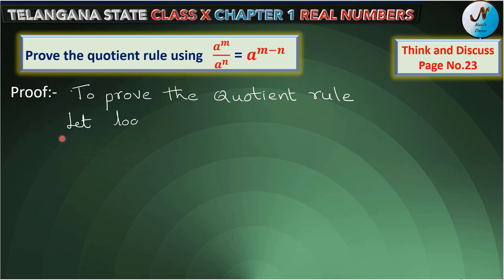To prove the quotient rule, let log x base a is equal to m. Let this one as equation 1, and log y base a is equal to n. Let this one as equation 2.